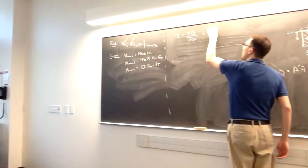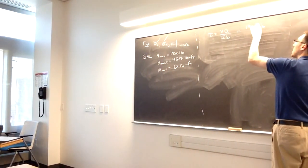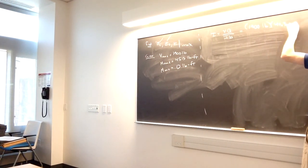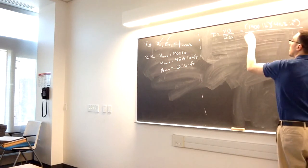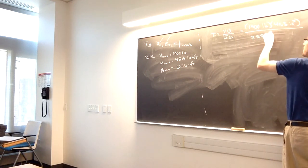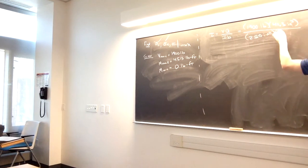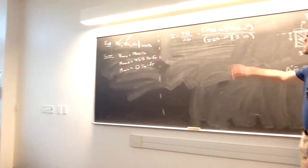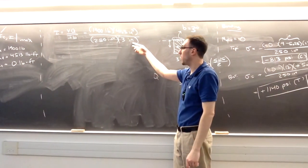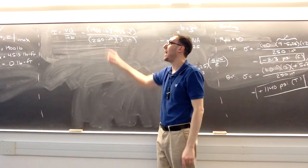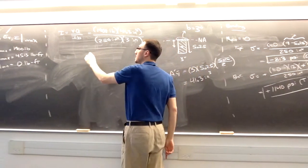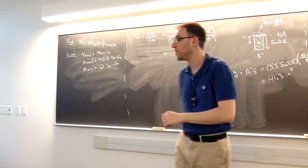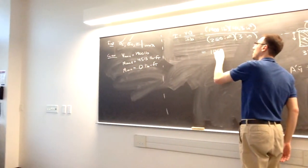Putting this all together: 1,900 pounds times Q of 41.3 inches cubed, divided by 250 inches to the fourth times 3 inches. Inches cubed over inches to the fifth gives 1 over inches squared, and with pounds on top this gives PSI. The maximum transverse shear stress is 105 psi.